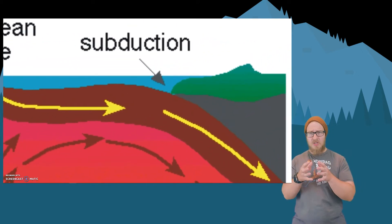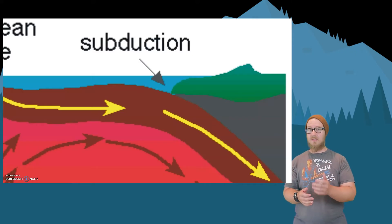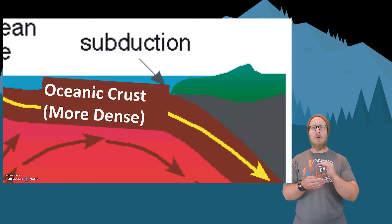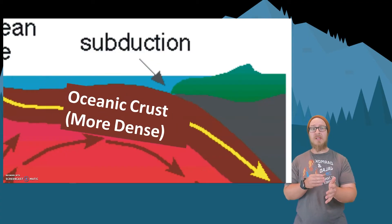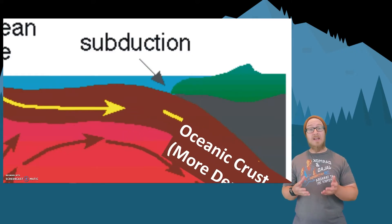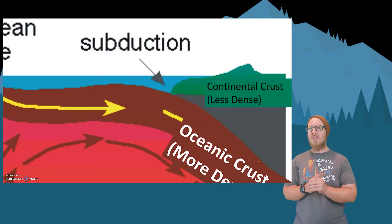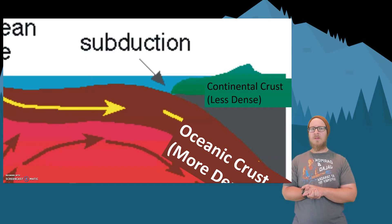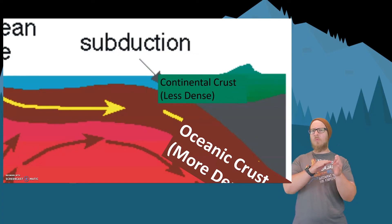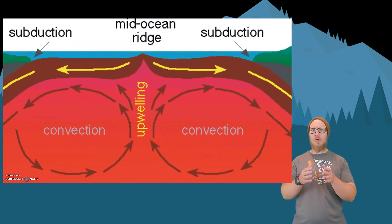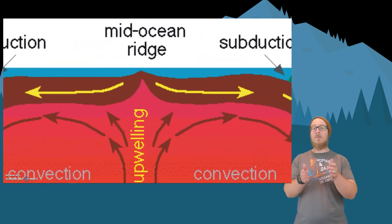When plates move toward each other, this region is called a subduction zone because one plate is subducting below the other. The plate that is denser will sink below the less dense plate. Oceanic crust tends to be denser than continental crust, so this is very common along coastlines. The continental crust, which is less dense, will remain above. Now let's look at what happens when two plates move away from each other.